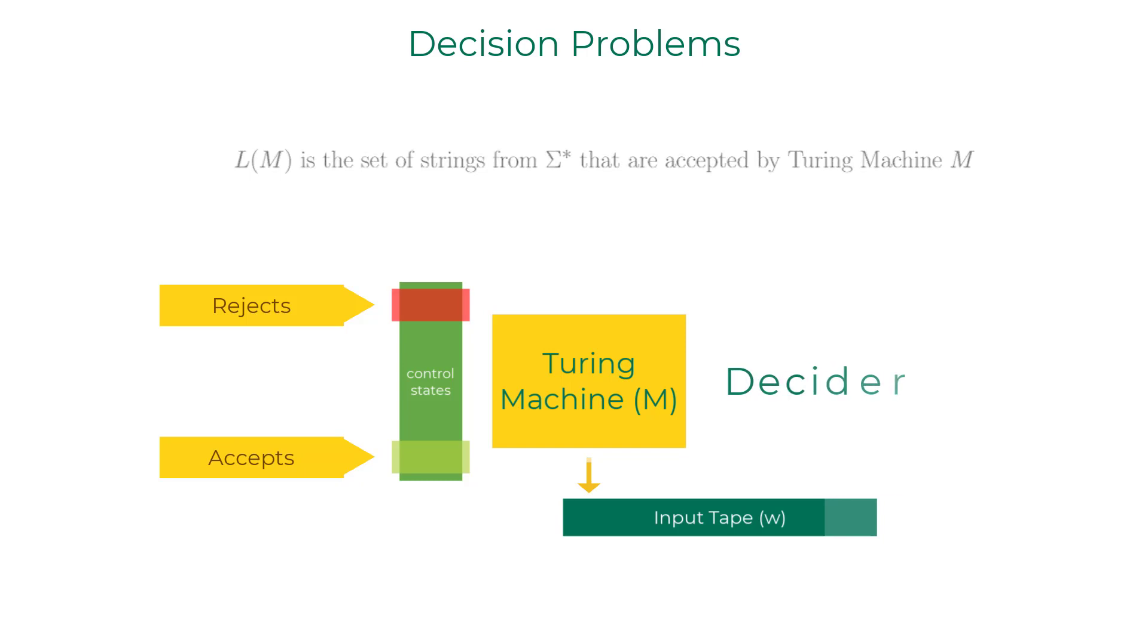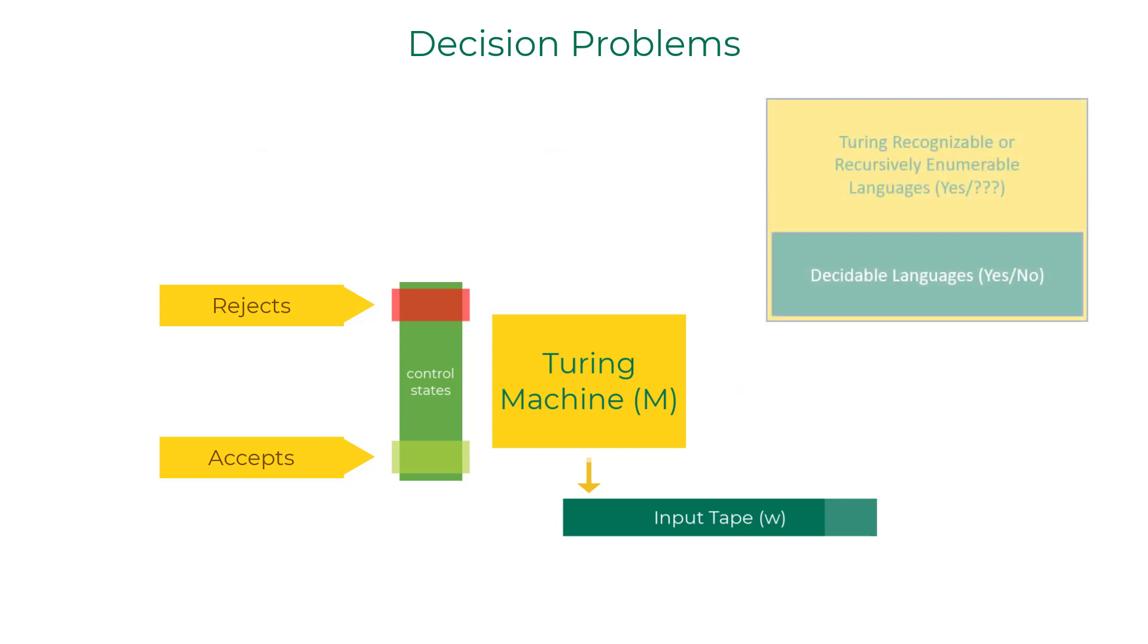The class of undecidable languages is a bit tricky to understand. Turns out that for few languages, there exists a Turing machine that always ends up in accept state for the strings that belong to the language,